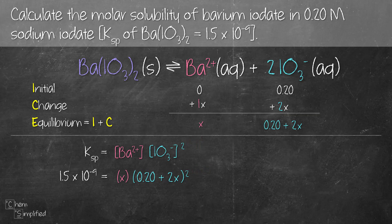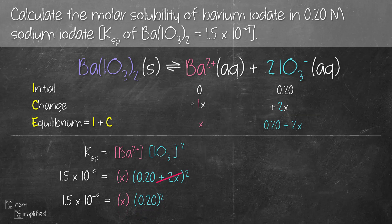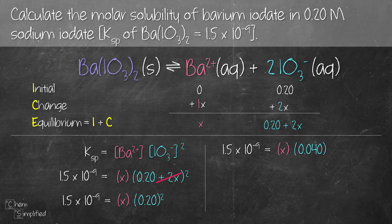We can simplify by noting that Ksp is very small — 1.5 × 10⁻⁹ — so the additional 2x is negligible and we can ignore it. This simplifies the equation to: 1.5 × 10⁻⁹ = x × (0.20)². Squaring 0.20 gives 0.04, and dividing both sides by 0.04 gives us x = 3.7 × 10⁻⁸.